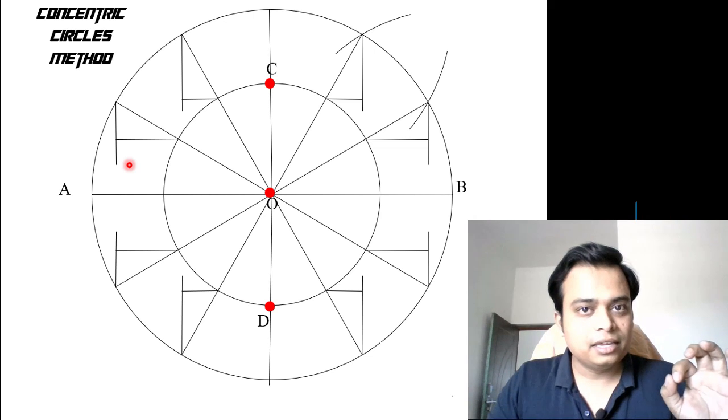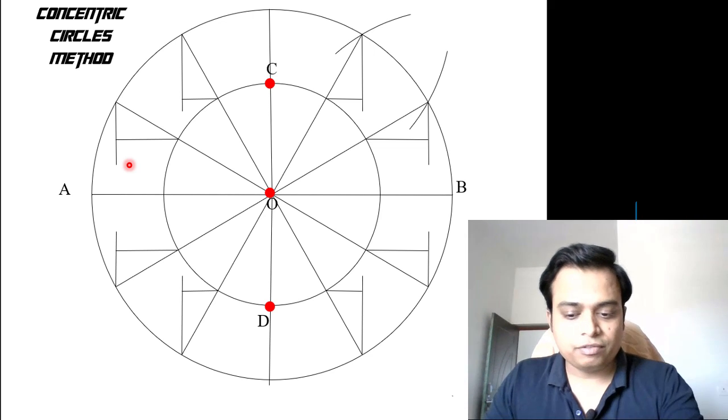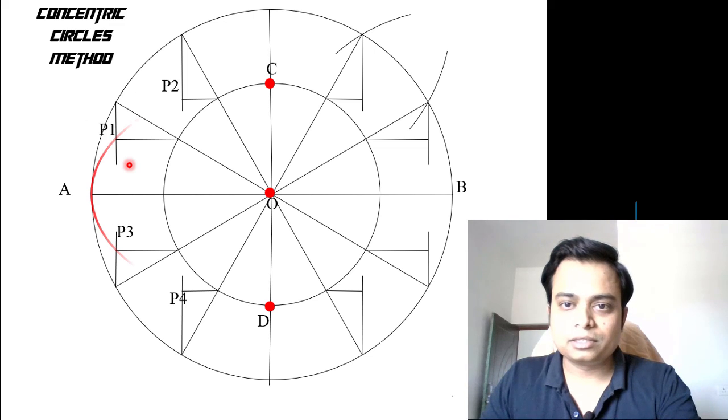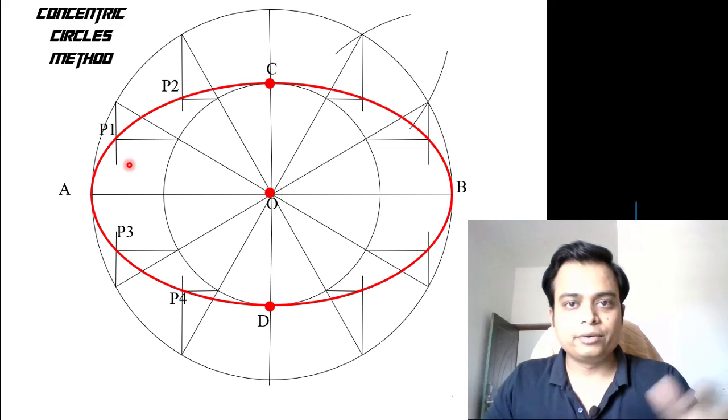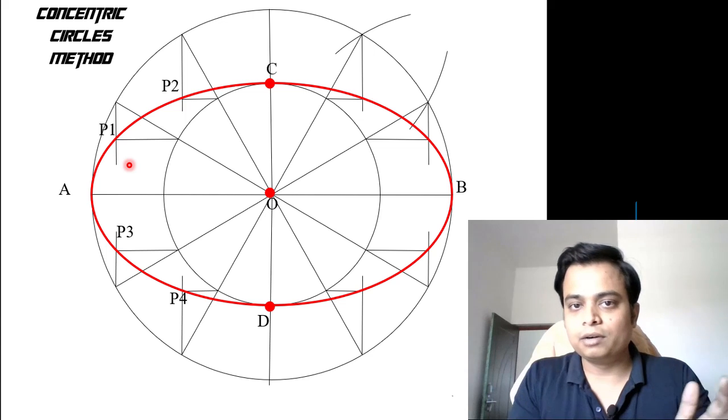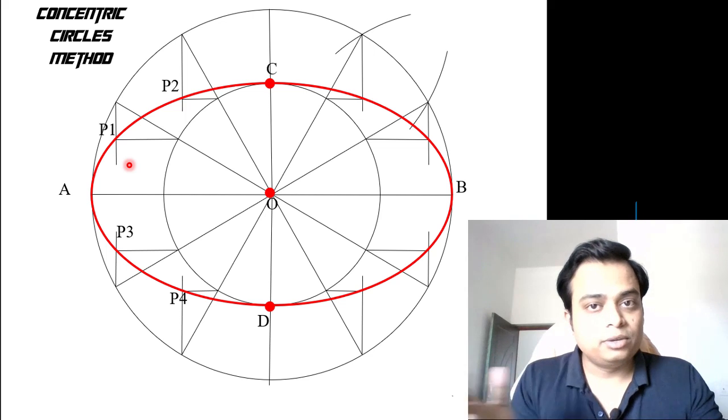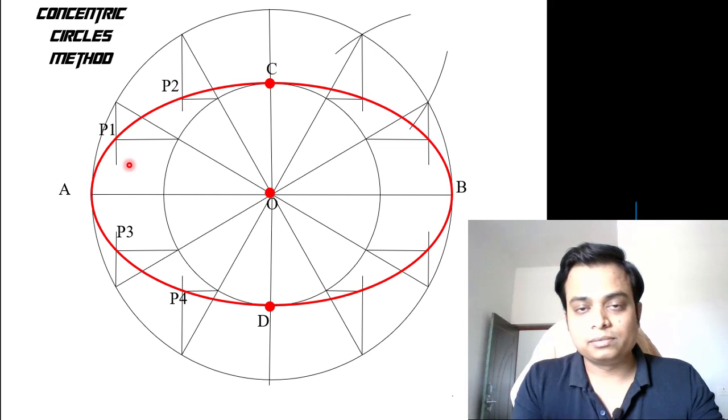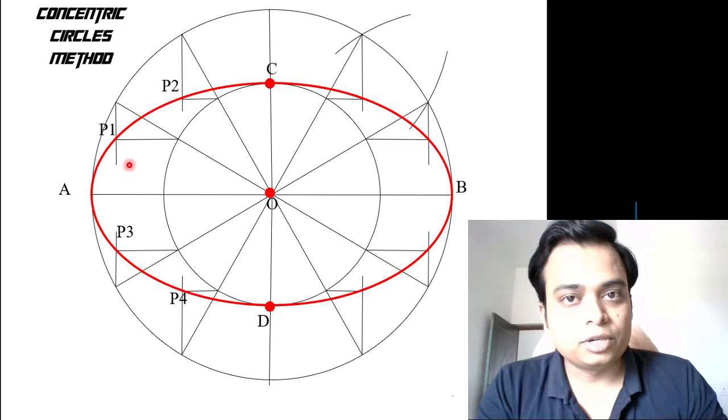You need to pass a curve through all these points. Finally, the ellipse you're going to achieve would look something like this. You can make this ellipse with the help of a French curve, a flexi curve, or if your hand is very good, you can do this freehand. That's it for today, I'll see you again.